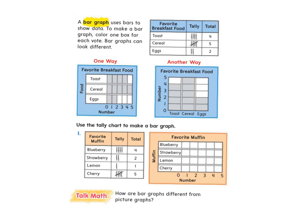So looking over here at my bar graph, I have a title. I have my label, which is what I'm counting, which is the number of people. And then I have my muffin type, which are the categories: blueberry, strawberry, lemon, and cherry.